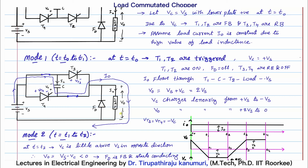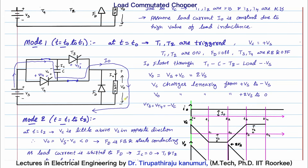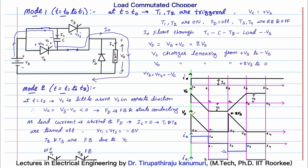Calculating the voltage across the load: going from minus to plus through the voltage source gives +Vs, then going from minus to plus through the capacitor gives +Vc. Since Vc initially equals Vs, the total load voltage is 2·Vs at T = T0. As current passes out of the positive terminal, the capacitor starts discharging and Vc decreases linearly — linearly because the current is constant. So the output voltage V0 = Vs + Vc also decreases linearly.